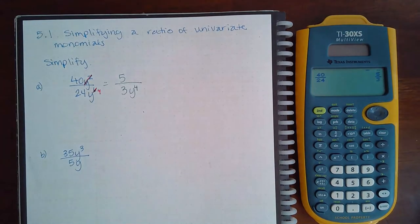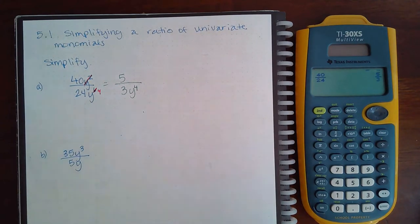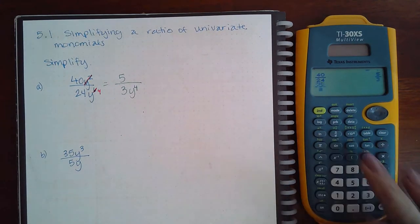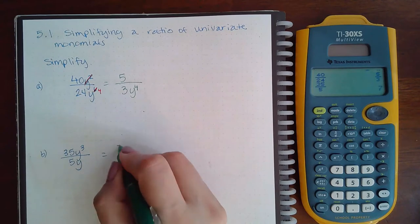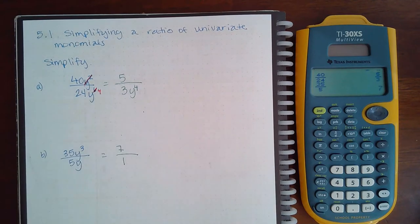Now same thing here. I can do 35 over 5, which just gives me a whole number 7. Remember, 7 can be written as 7 over 1, right?